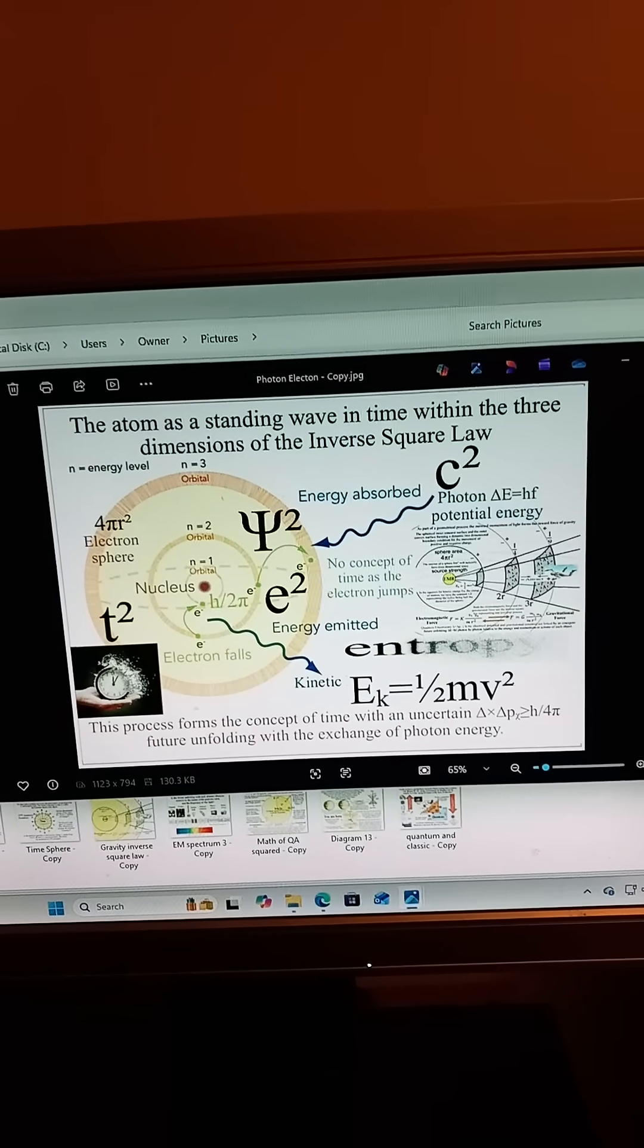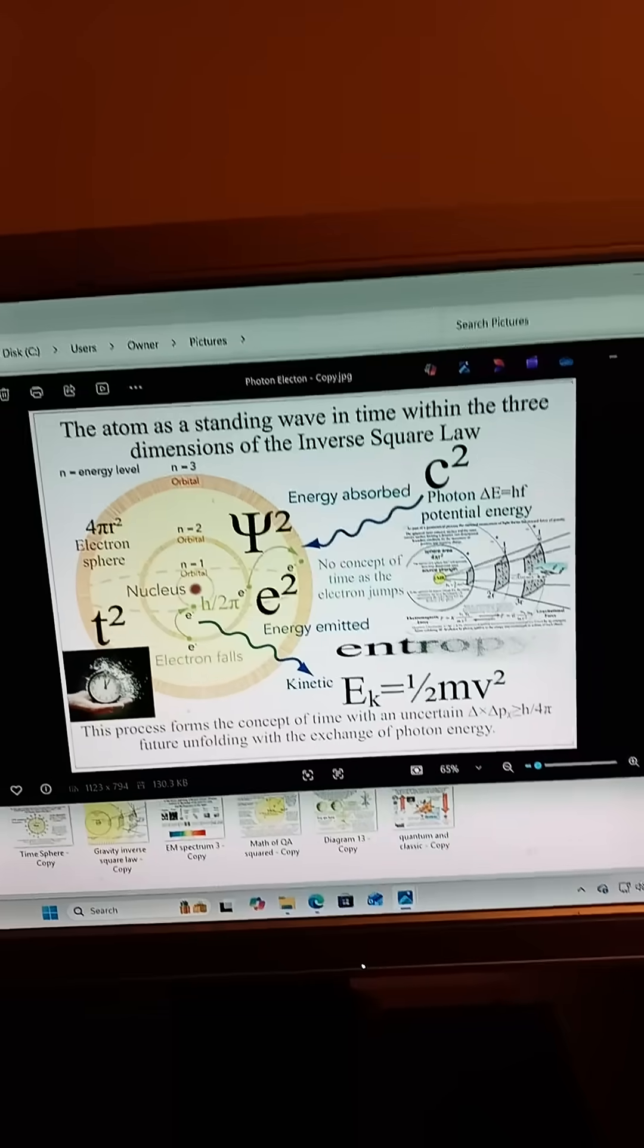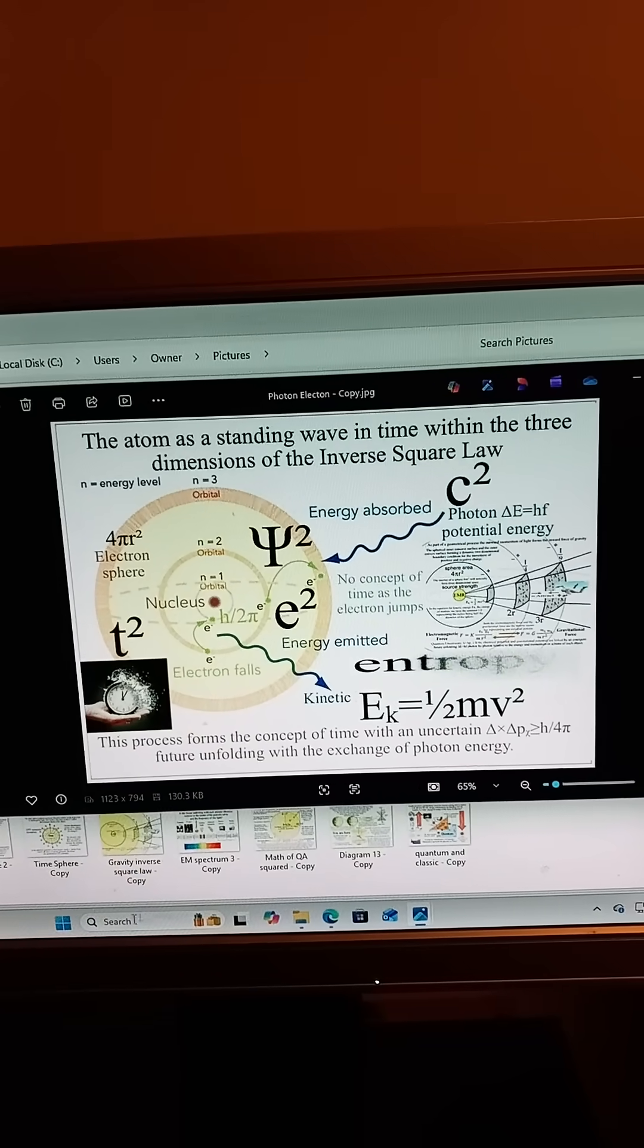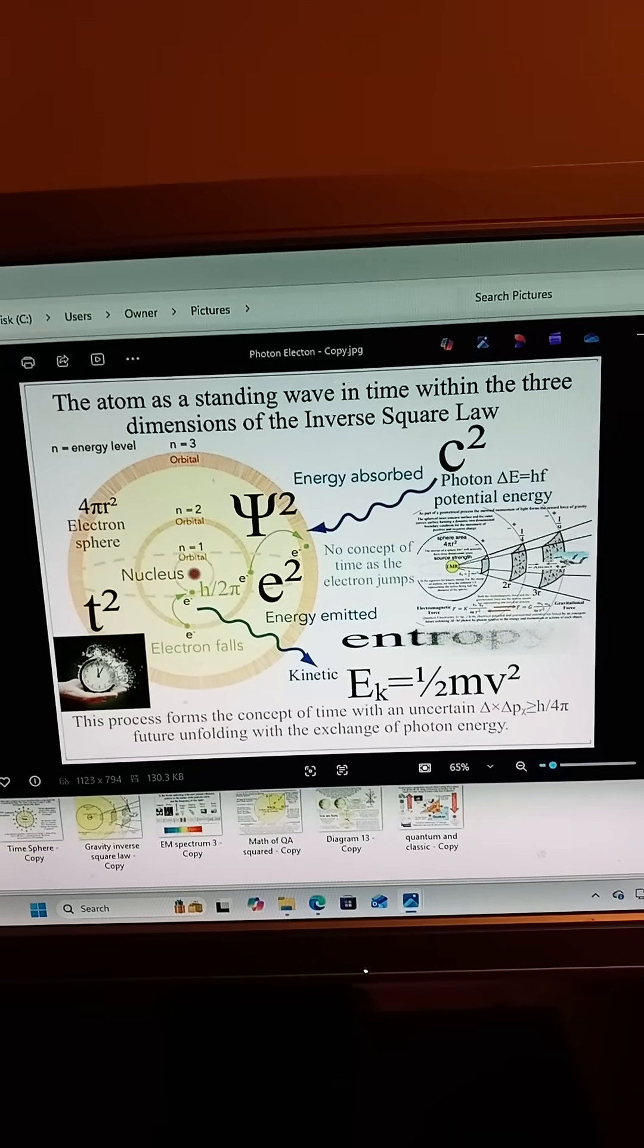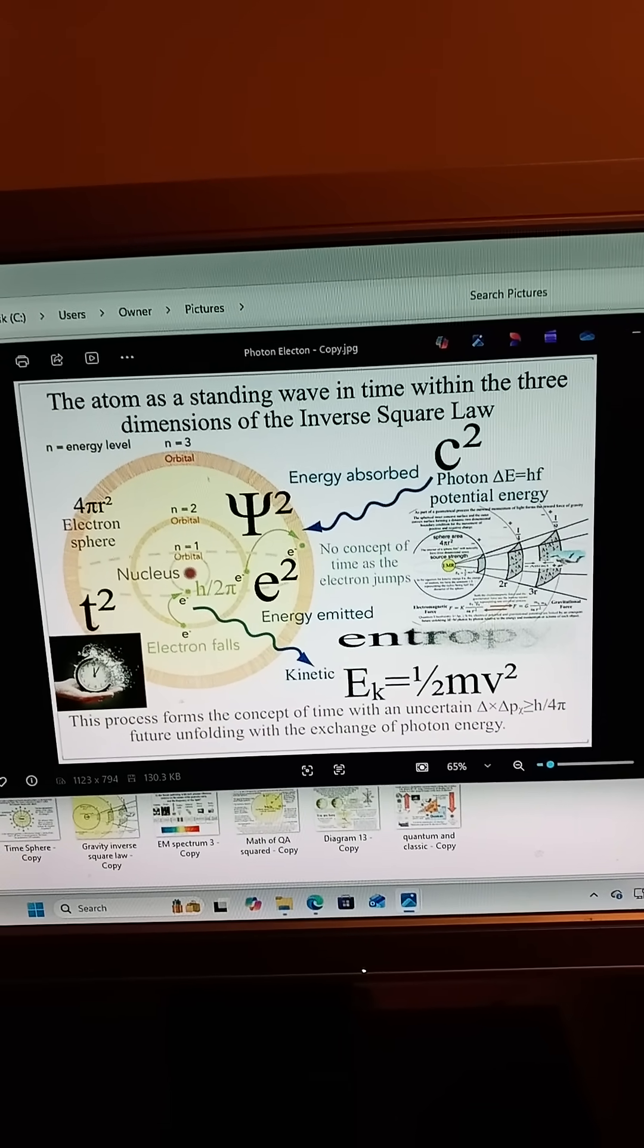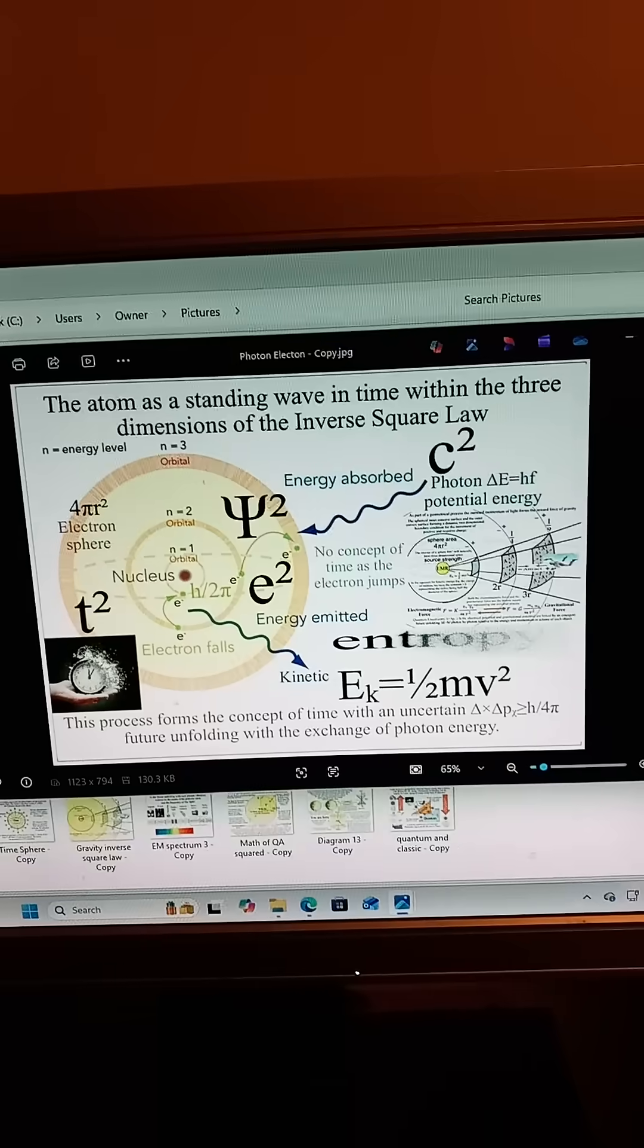Something changes, energy shifts, and the future becomes slightly more decided. Because quantum events are probabilistic, the future is not fixed. Time is the record of these interactions, a history written one photon at a time.